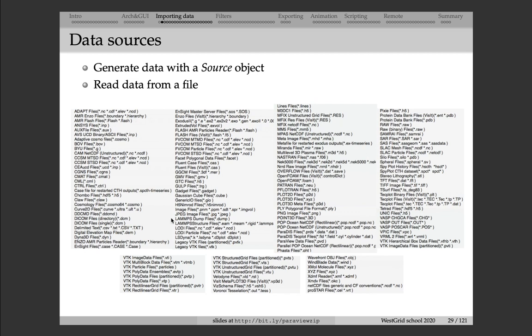Notice that there are also many familiar packages here. For example, OpenFOAM is an open source package for fluid dynamics. Enzo is a galaxy formation code. Fluent is another package for fluid dynamics. Flash is an astrophysics code. Then there is Gaussian, which is a chemistry simulation package, and so on. So a lot of popular packages output data in fairly standard files, and these can be read directly by ParaView.